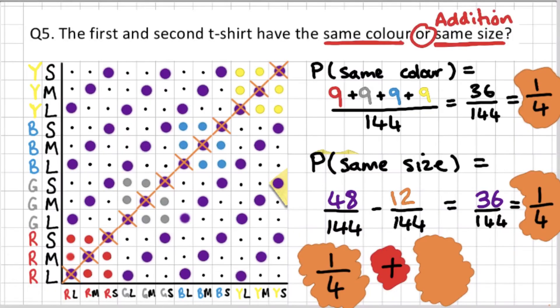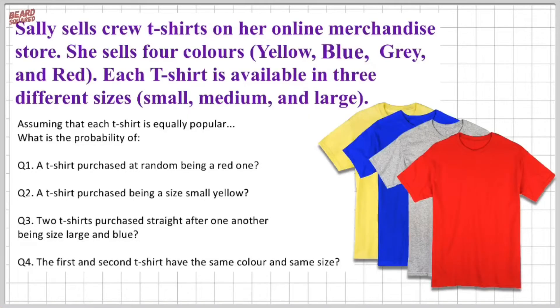Also, stick to the end because I'm going to have a bonus question, which is going to be a super tough one that I'm going to show you how to work out. Assuming that each t-shirt is equally popular, what is the probability of: